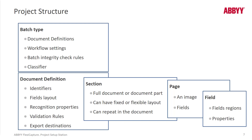A document definition by default always has an initial section, but it can have additional sections — that's really important if you've got pages in your document that repeat. In that case, you want to create a separate document section for those repeating pages. There's a document assembly GUI interface that allows you to set some simple rules. A document section must have at least one page and will have fields for processing.